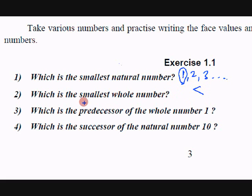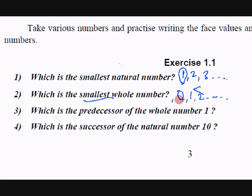Which is the smallest whole number? How does the whole number start? Whole numbers go 0, 1, 2, etc. So which is the smallest one — is it 1, 2, or 0? Yes, 0 is the smallest.